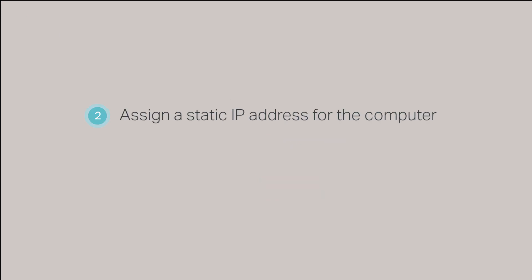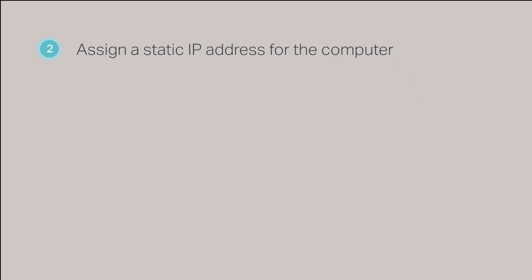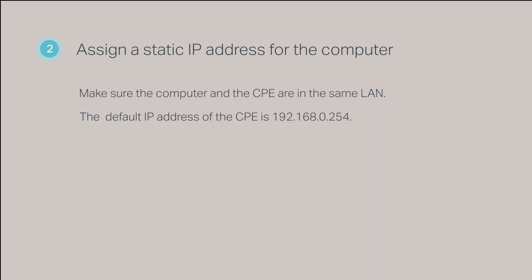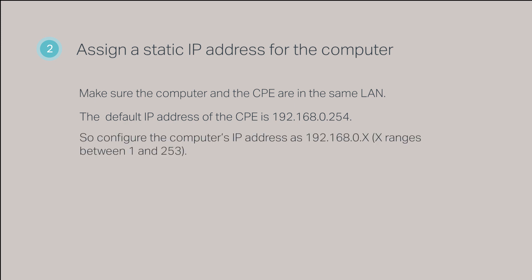Step 2, assign a static IP address to the computer. To configure the computer to talk to the CPE, you will need to make sure that the computer and the CPE are on the same LAN. The default IP address of the CPE is 192.168.0.254, so you will need to assign a static IP address below that. Static IP addresses in the range of 192.168.0.1 through 192.168.0.253 will be acceptable.